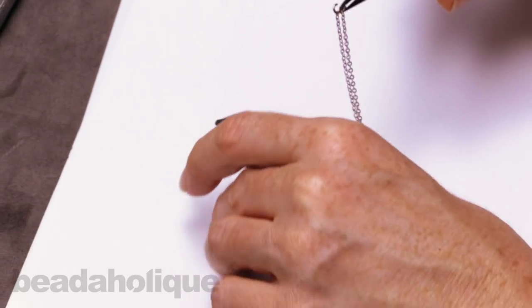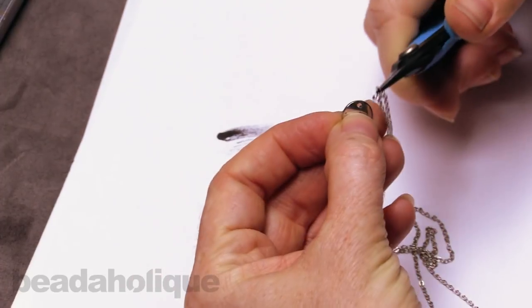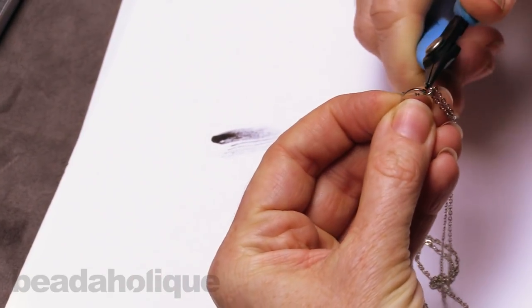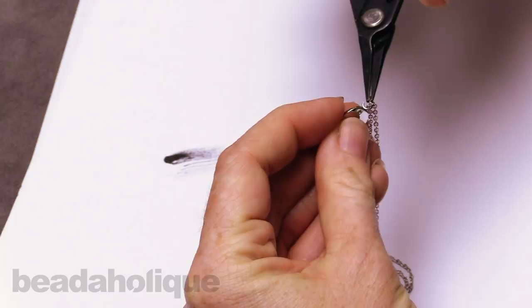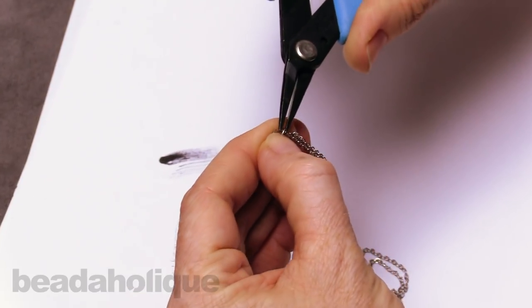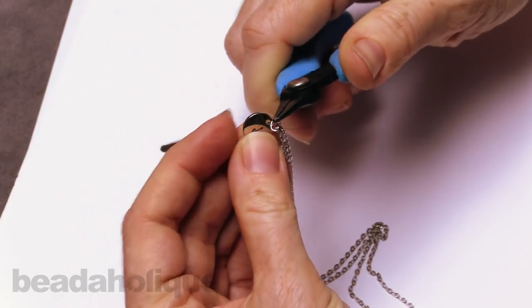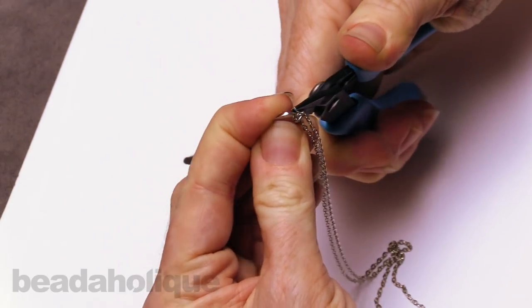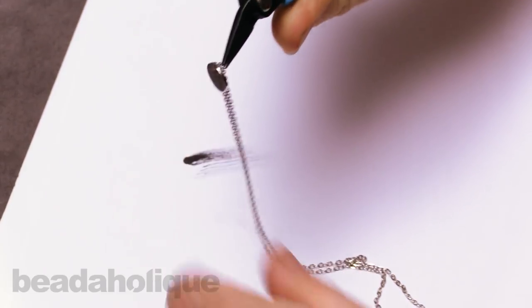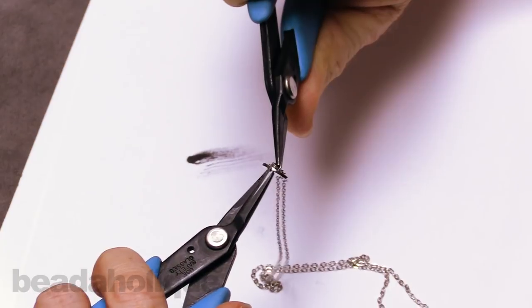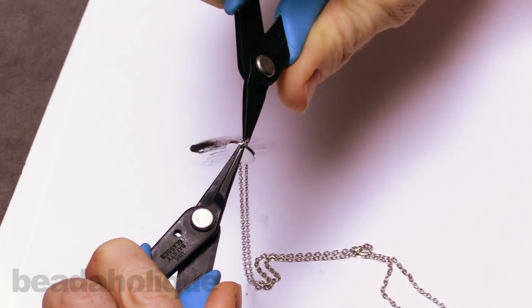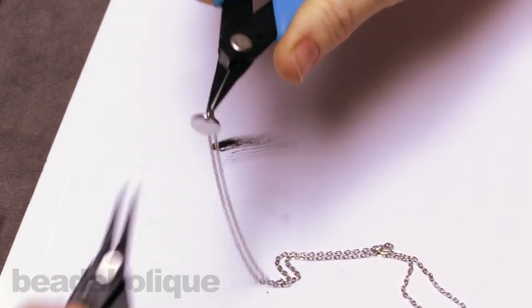Okay. So I've got that open. Just going to slide. Oops, I am not giving myself enough room there. There we go. Close up that jump ring so the ends meet.